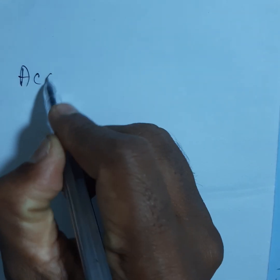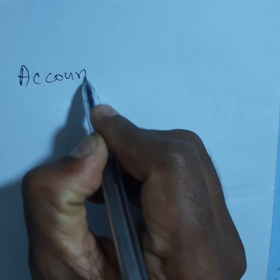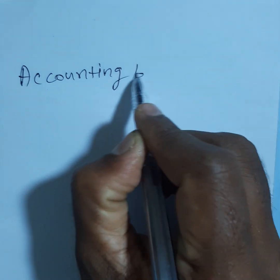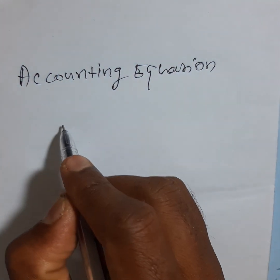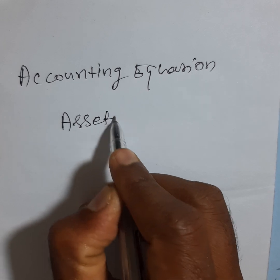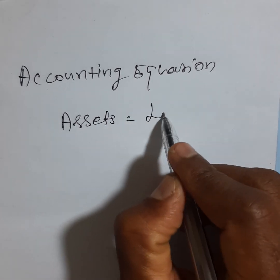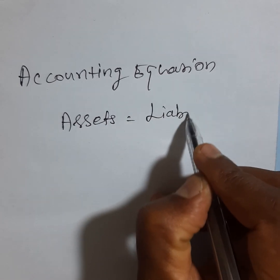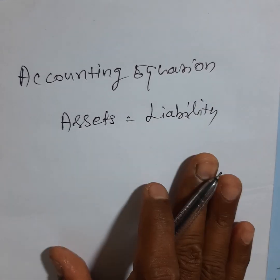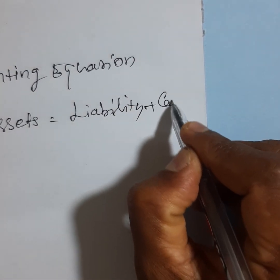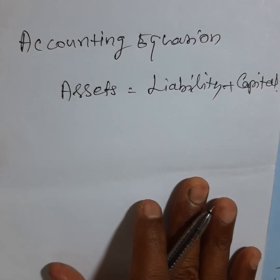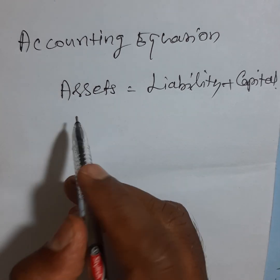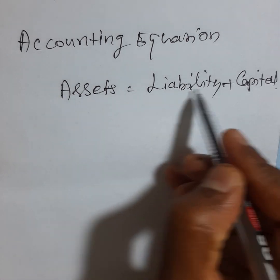Accounting equation. Assets equal liability plus capital. It is the accounting equation: Assets equal liability plus capital.